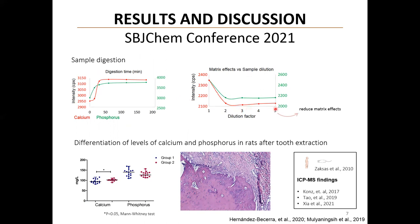However, we fixed the factor 5 in order to avoid matrix effects. When testing the capability of the optimized method to differentiate levels of calcium and phosphorus in serum of rats submitted to tooth extraction with and without bone graft, group 1 showed lower concentration of calcium and higher concentration of phosphorus than group 2. There was a significant difference in the analysis of calcium, which could indicate a higher mobilization of calcium from the blood to the bone in this group.